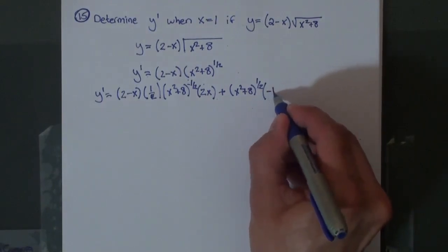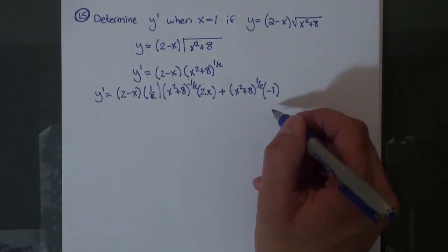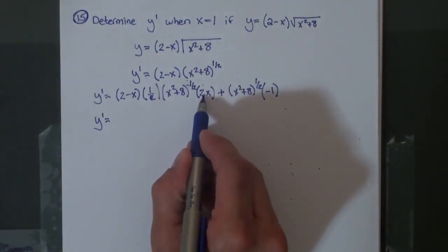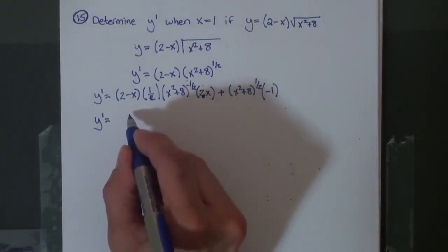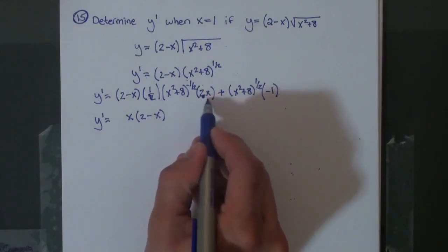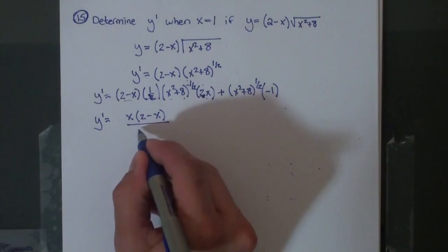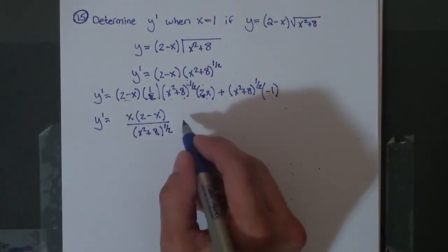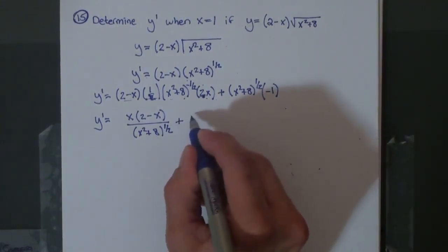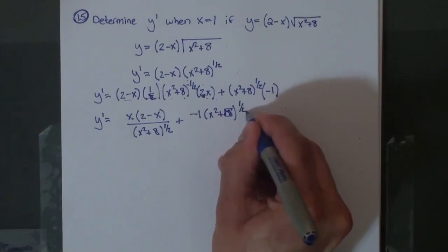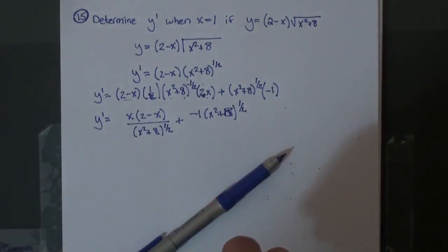To that, we're going to be adding: keep the second part the same, times the derivative of the first part, which in this case is just negative 1. Now we clean this up a little bit. We can multiply terms together and we'll end up getting, in the numerator, x times 2 minus x — with the exponents canceling — all over x squared plus 8 to the 1 half. Then the second portion is simply negative 1 times x squared plus 8 to the 1 half.